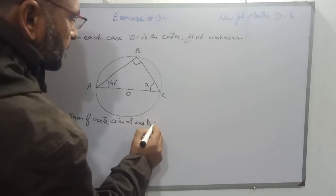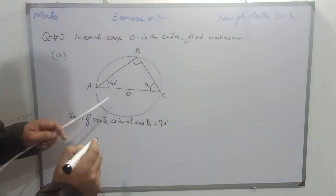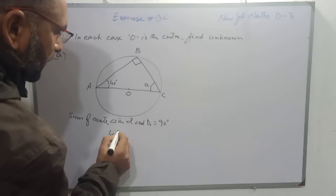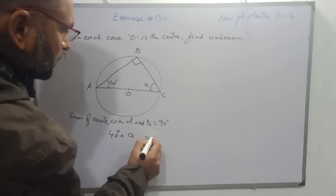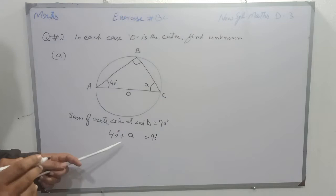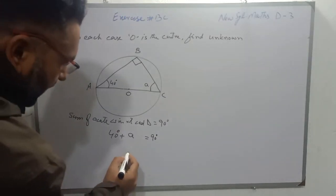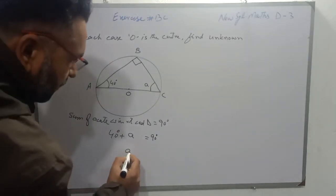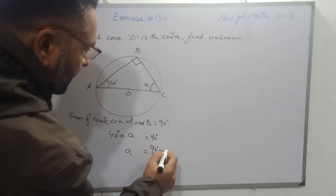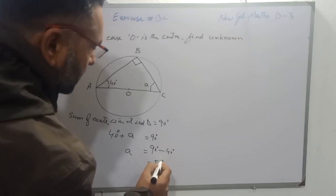So this angle is 40 degrees and the other acute angle is A. Together they equal 90 degrees. Transferring 40 to the other side, the value of A will be 90 degrees minus 40 degrees, so the value of A is 50 degrees.